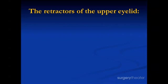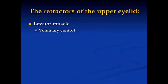When we talk about blepharoptosis, the retractors of the upper eyelid — there are three of them. The first one is the levator muscle, which probably does 90% of the work. It's involved in the voluntary control of eyelid elevation, and it's controlled by the superior branch of the third cranial nerve.